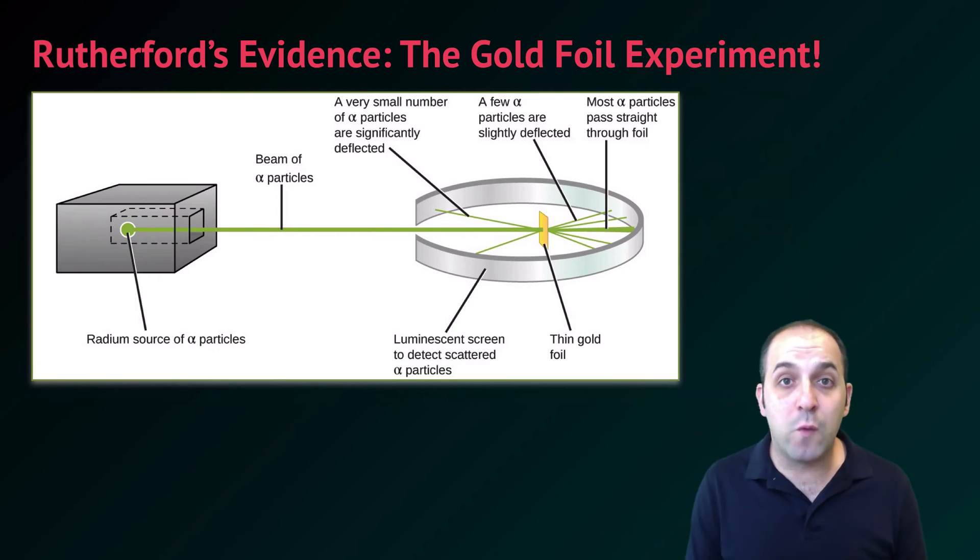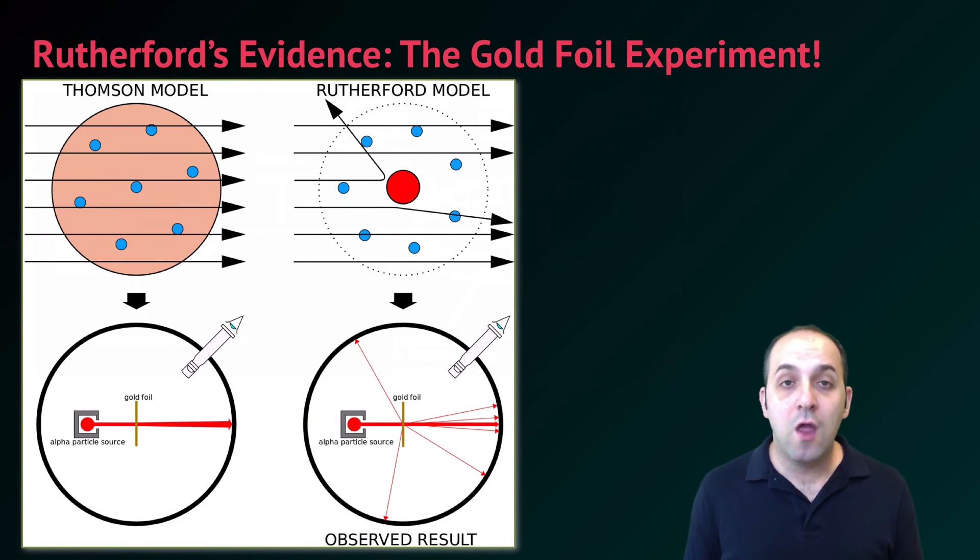What Rutherford's students do is they take a very thin sheet of gold atoms and surround it with a phosphorescent screen. This phosphorescent screen will give off a glow anytime a particle hits it. They then take a source of alpha particles and point it at the gold sheet, firing alpha particles at incredibly fast speeds. By looking at the pattern of light produced on the phosphorescent screen, they can see where the particles wind up. It turns out that most of the alpha particles go straight through the foil, but every once in a while one gets repelled, coming back almost 180 degrees. This is the conclusive disproof of the Thompson model. If the Thompson model were correct and the atom was just a diffuse cloud of positive charge, the alpha particles would basically just go straight through.